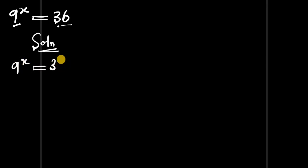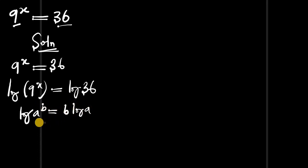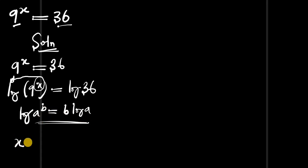What can we do at this point? Let's introduce log. We have log of 9 to the power of x equals log of 36. Now from the identity: log of a to the power of b equals b times log of a, this exponent will come in front. So we get x times log of 9 equals log of 36.